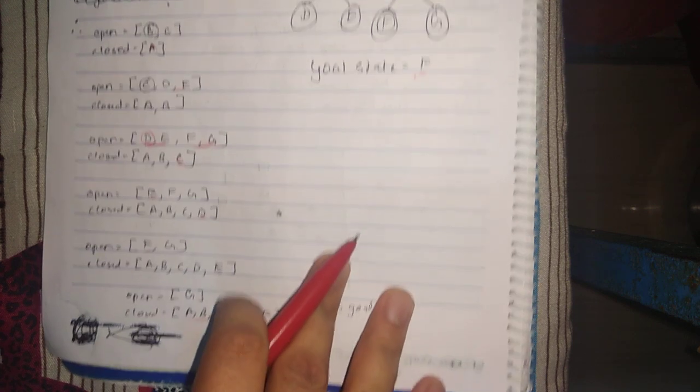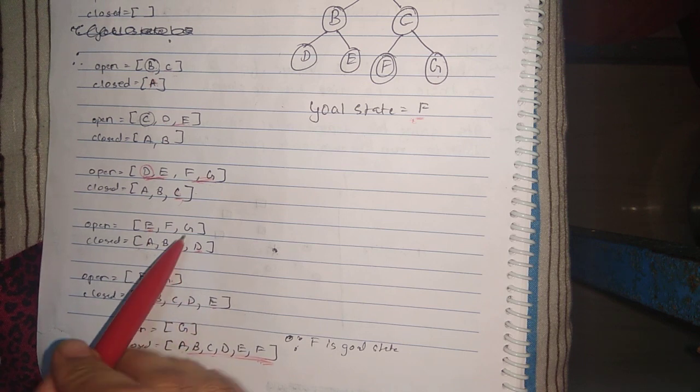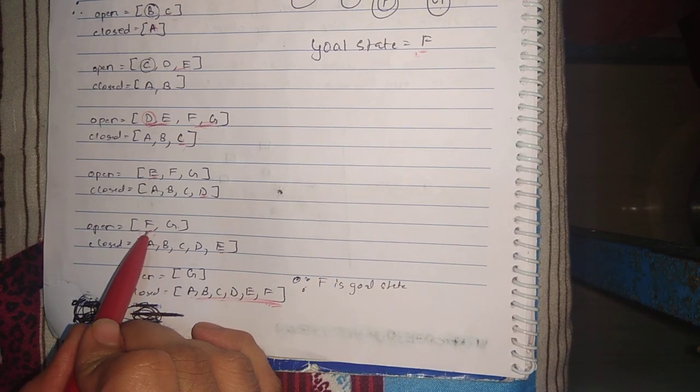Once it is placed in the closed array, the next elements remaining are F and G. Next is F, and F is a goal state that we require.